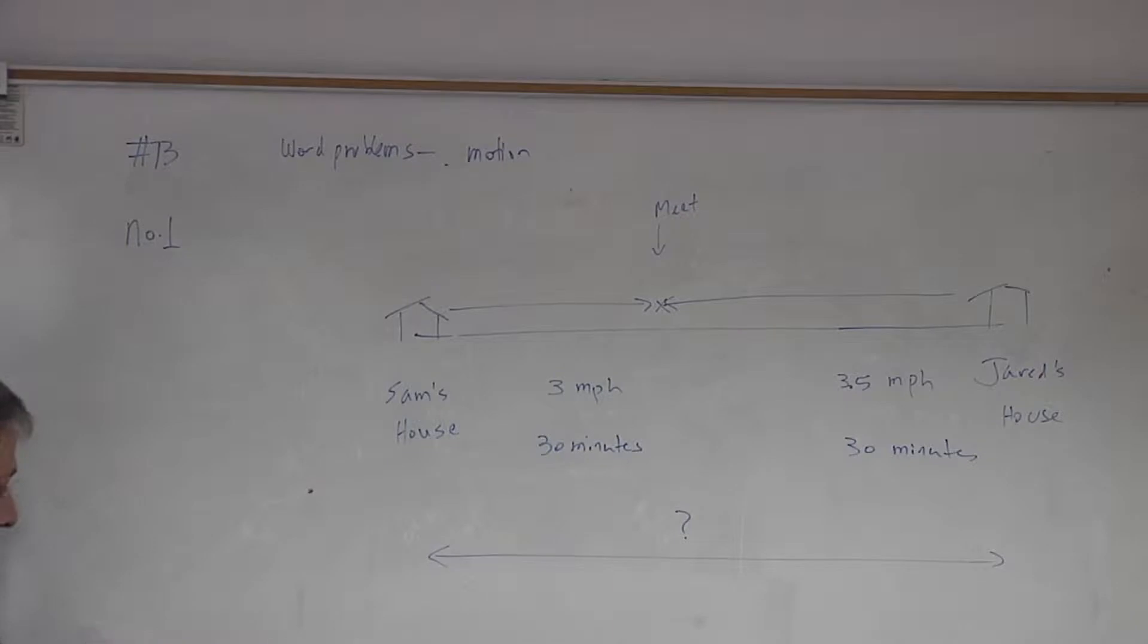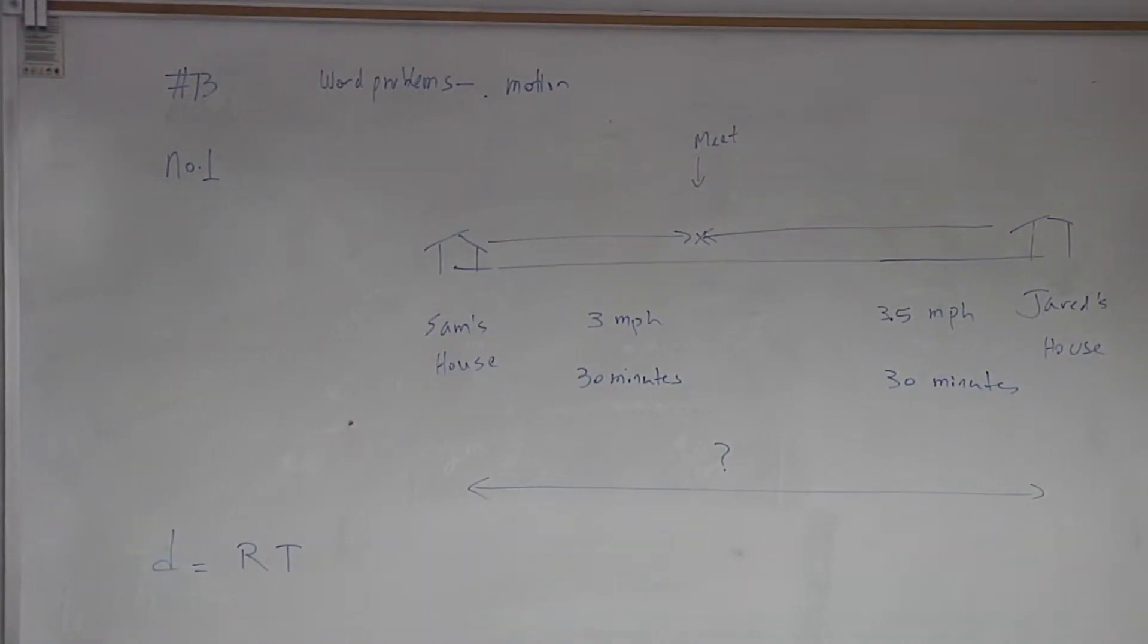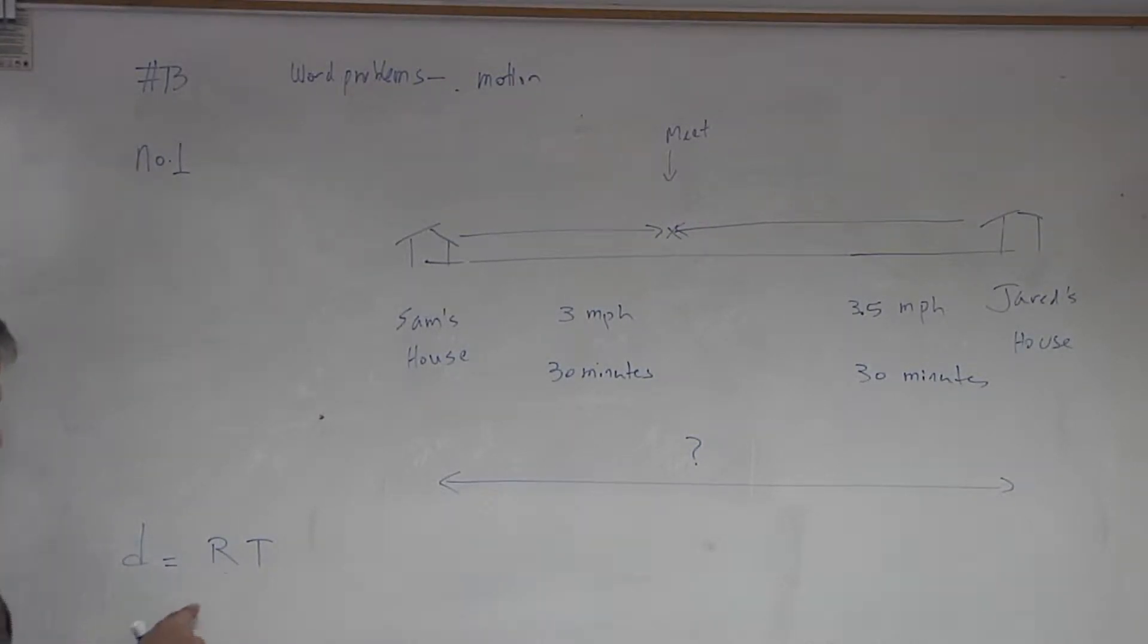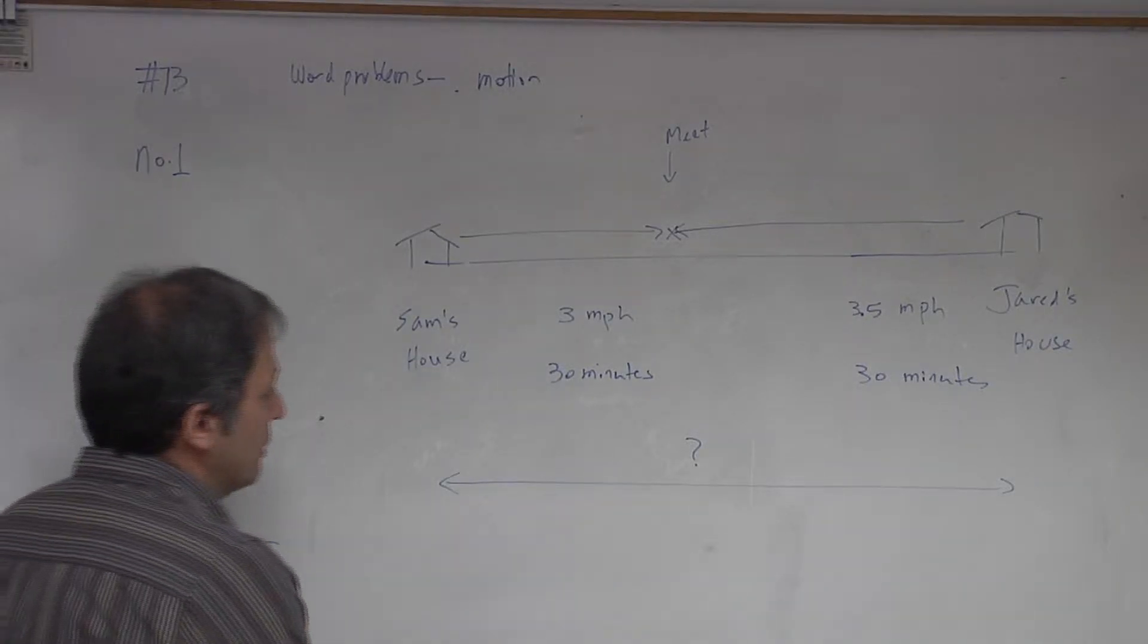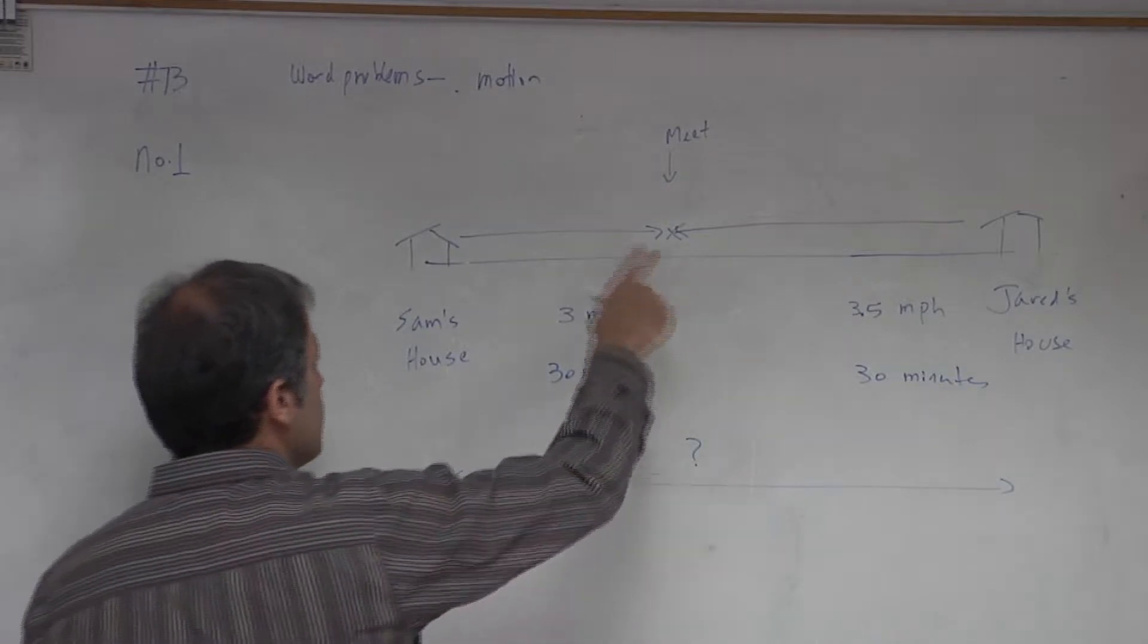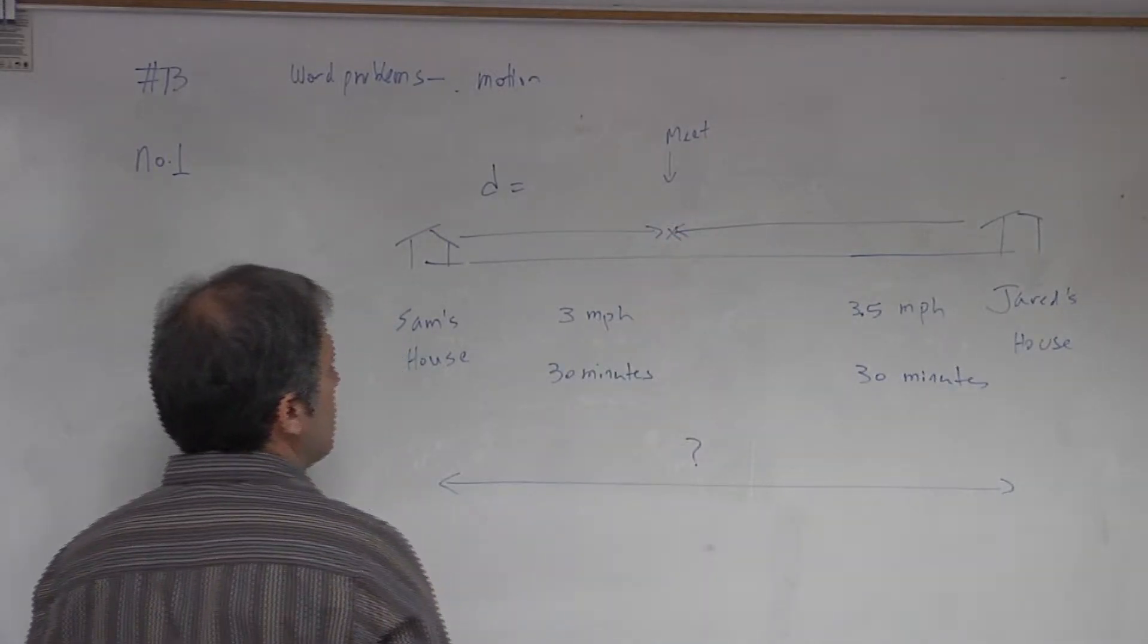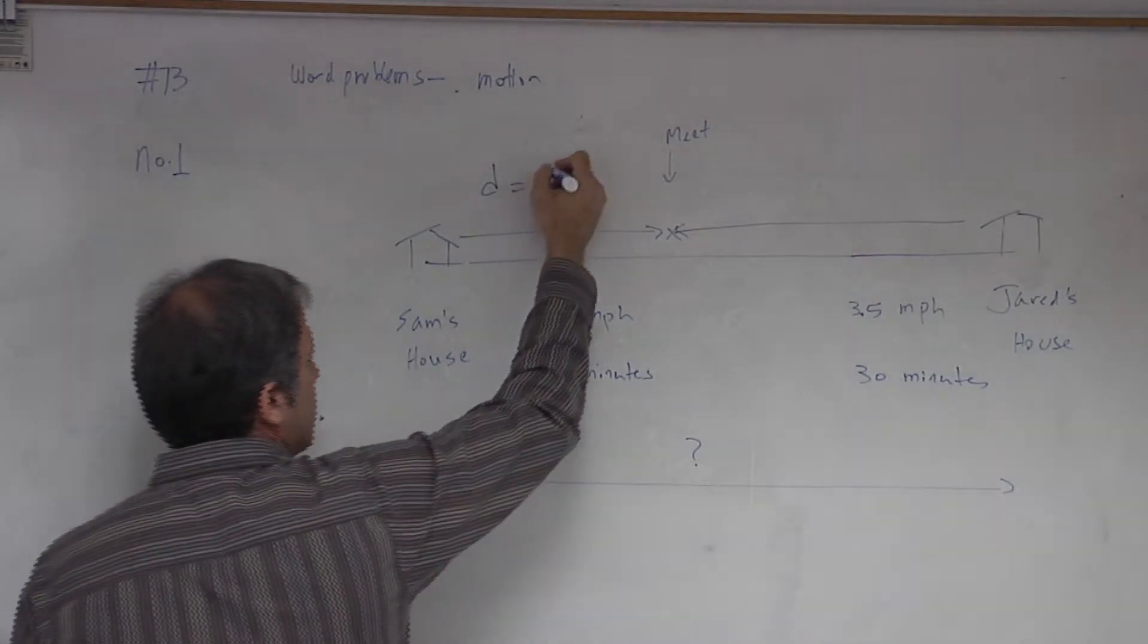Now what you need to do is to use the equation that is called distance equal rate times time. To find the distance you have to get the rate and then the time of travel and then multiply it to get the distance. So this is one distance we need to figure out to the point where Sam meets Jared, and that distance should equal the rate, three miles per hour, times 30 minutes.